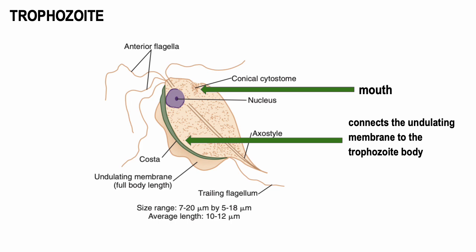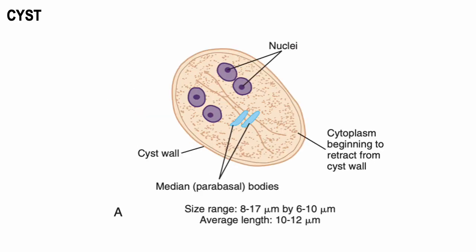The costa is the green portion of the picture shown here, though under the microscope it is not actually green — this coloring is only to highlight the difference. Your undulating membrane is for movement as well. In terms of the cyst form, the presence of multiple nuclei are evident, along with the parabasal bodies.